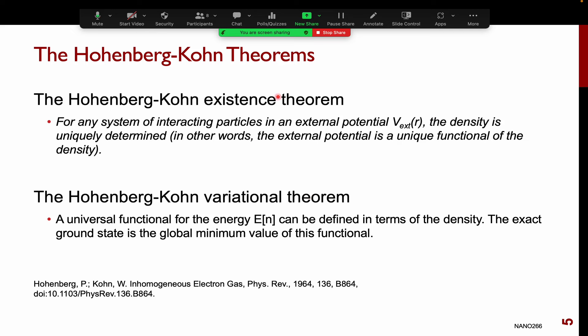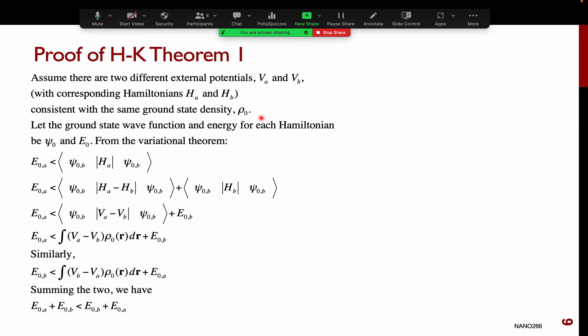The first theorem is actually very simple to understand, and the proof is relatively straightforward. The proof uses what is called proof by contradiction: you first make an assumption that is the reverse of what you want to prove, and you show that this assumption leads to a contradiction. In doing so, you show that your original assumption was false.